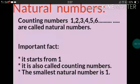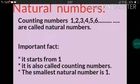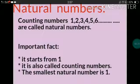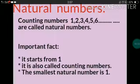Natural Numbers: All the counting numbers 1, 2, 3, 4, 5, 6, 7 and so on up to infinity are called natural numbers. Some important facts: it starts from 1, it is also called counting numbers, and the smallest natural number is 1.